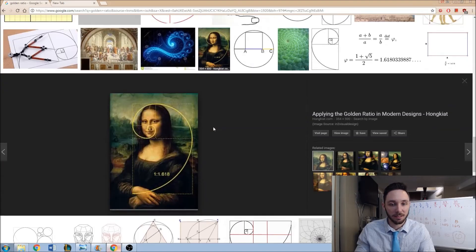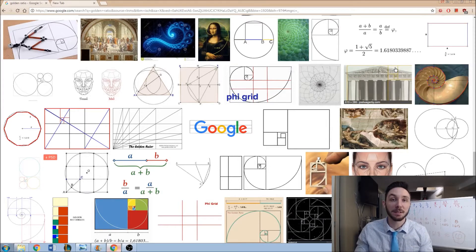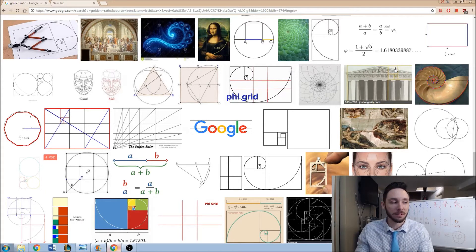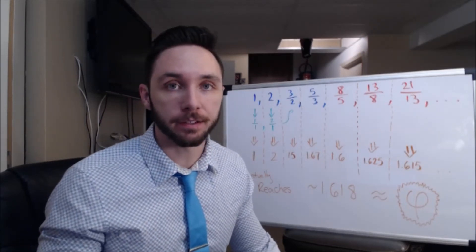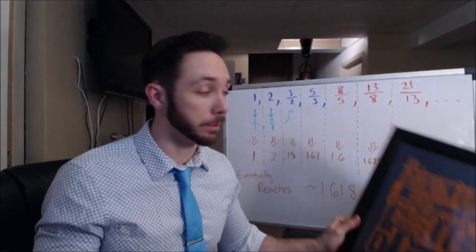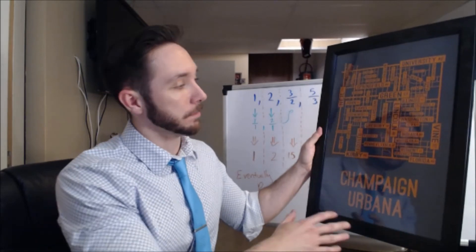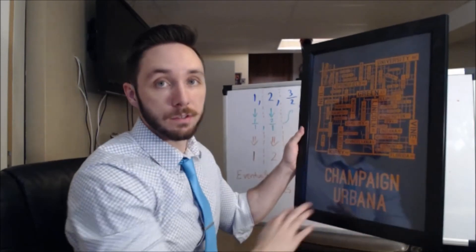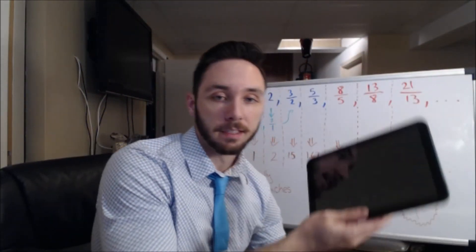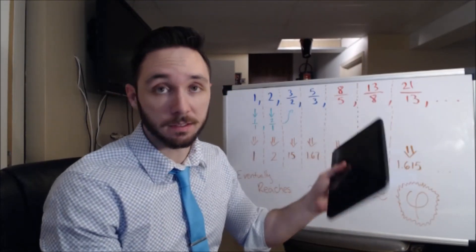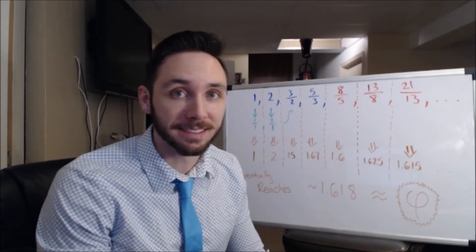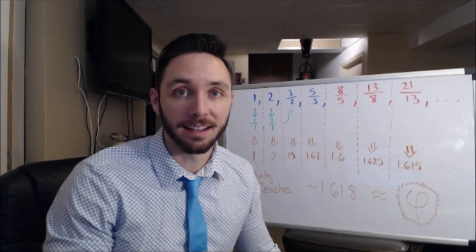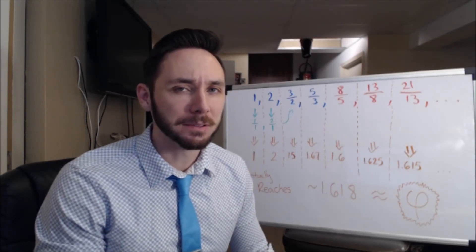Whether you think the golden ratio is a hoax or not, it has cultural significance — and it's kind of crazy how it showed up in the domain of a continued fraction. I went around the house with a ruler measuring things, because what else do math teachers do over summer break? I found a photo (my alma mater, U of I), a Motorola Zoom tablet, and the board I was using — all with a ratio of length to width of approximately Phi. Cool stuff. I hope you continue mathing on, and I will see you in the next video.